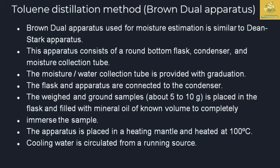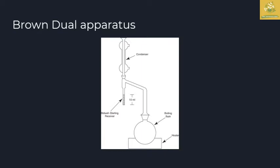The next method is the toluene distillation method using the Browne-Duval apparatus, which is similar to the Dean Stark method but with some differences. This apparatus also has a round bottom flask, condenser, and moisture collecting tube with graduations. It requires 5 to 10 grams of a weighted ground sample placed in the flask and filled with mineral oil of a known volume to completely immerse the sample. The apparatus is heated at 100°C, unlike the Dean Stark apparatus which uses 80°C to 110°C.